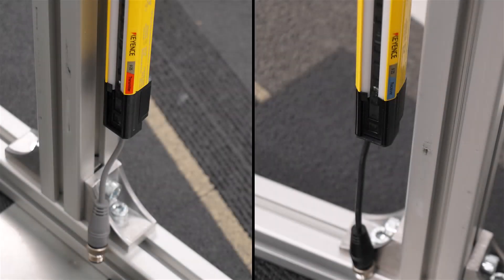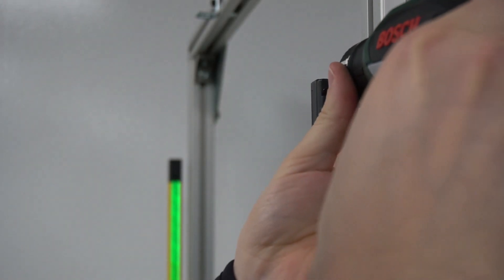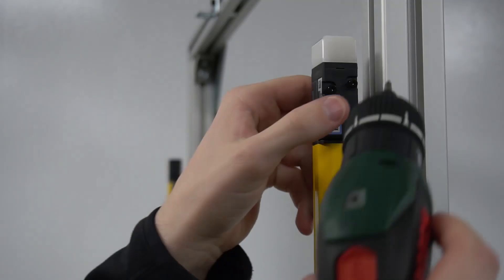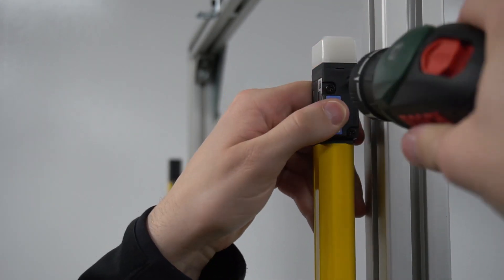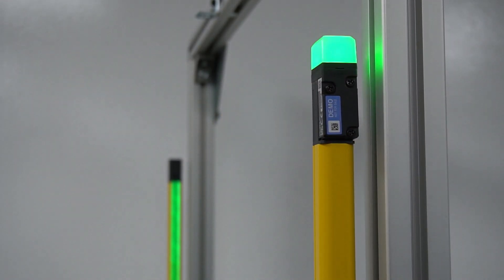On the bottom of the curtains, you'll find the M12 connector for the power cable already attached. On the opposite side, you can find the end cover that you would remove to adjust the setting switches, connect additional sets of light curtains in series, or install the external lamp.